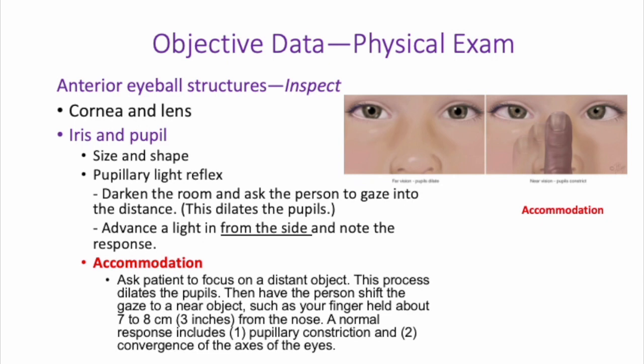To check for accommodation, ask the patient to focus on something in the distance — wait to see dilation happening. Then have the patient shift their gaze to a near object — about eight centimeters, which is three inches, from the nose. What you should normally see is that as they move their gaze from far, causing dilation, to closer, causing constriction, there is convergence of the axis of the eyes. That is the accommodation from far vision to near vision.